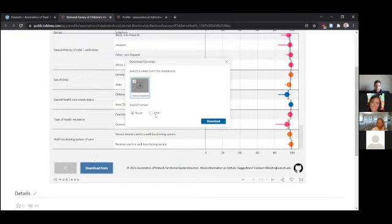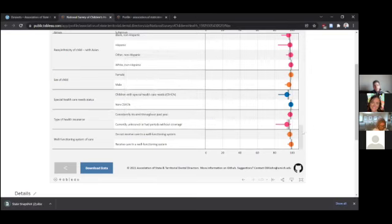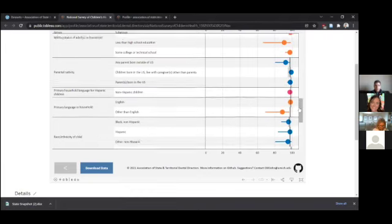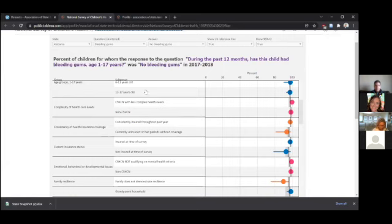So this will let you choose the format of the data you'd like to download. You can download it as an Excel file. If I were to do so, it would then take the data you're seeing on the screen. So you would take data points only for Alabama, for these, for bleeding gums, percent reporting no bleeding gums only, and it would put it into a spreadsheet for you to download. So if you don't want, if you want the entire data set, like the giant, all the data that's going into this, you could find that on our GitHub page. If you just want to download the data set for what you're seeing here in this current screen, you could use that download box there.